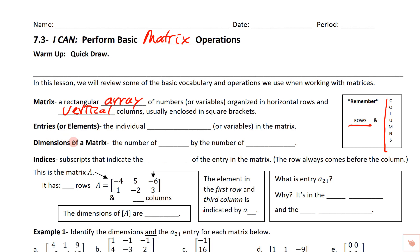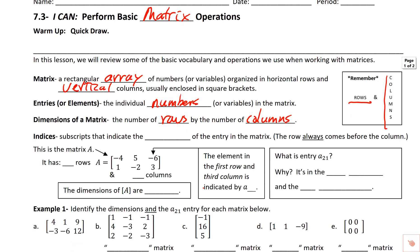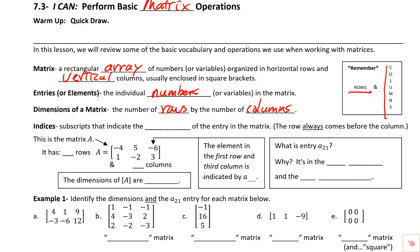The entries or elements are the individual numbers — most of the time we're dealing with numbers, but occasionally they'll be variables. The dimensions of the matrix are the number of rows by the number of columns — rows always first. Indices are subscripts used to keep track of what element is where, indicating the position of an entry, and again rows always come before the column.